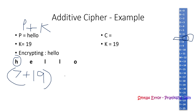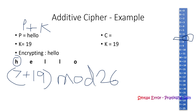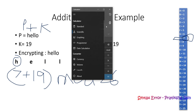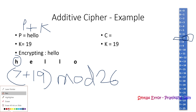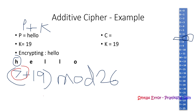After adding, we perform mod 26. Using the calculator: 7 + 19 = 26, and 26 mod 26 = 0. So instead of 7, we got result 0. In the table, 0 corresponds to A, so the first letter of the cipher text is A instead of H.